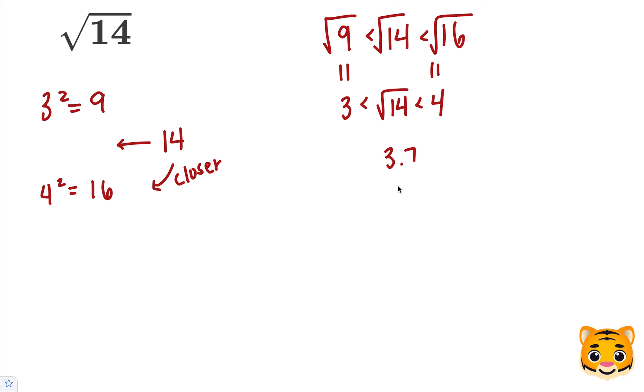Let's try 3.7 times 3.7, which is 3.7 squared, and see how close we can get to 14. 7 times 7 is 49, carry the 4. 3 times 7 is 21, plus 4 is 25. Add our 0. 3 times 7 is 21, carry the 2.